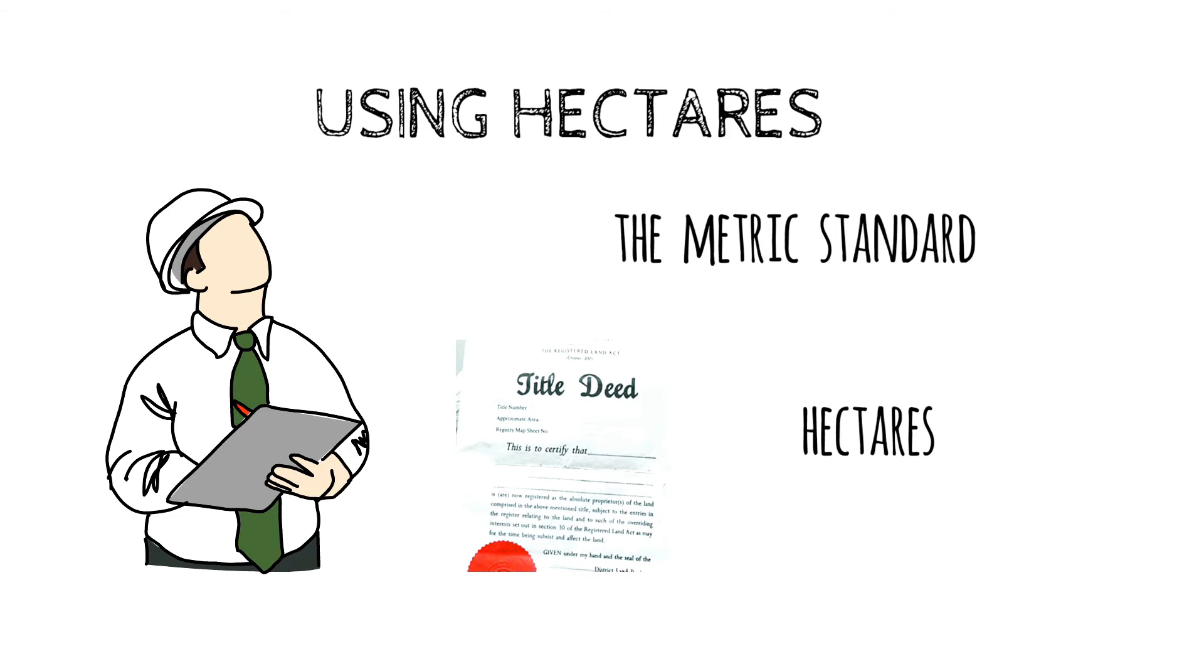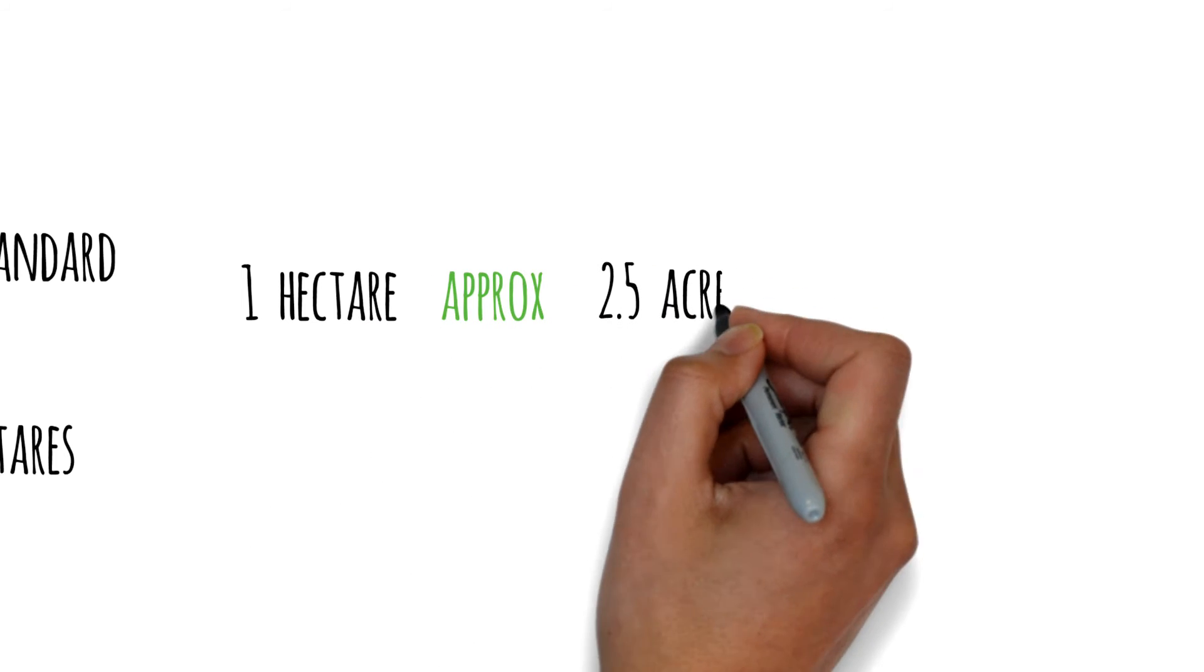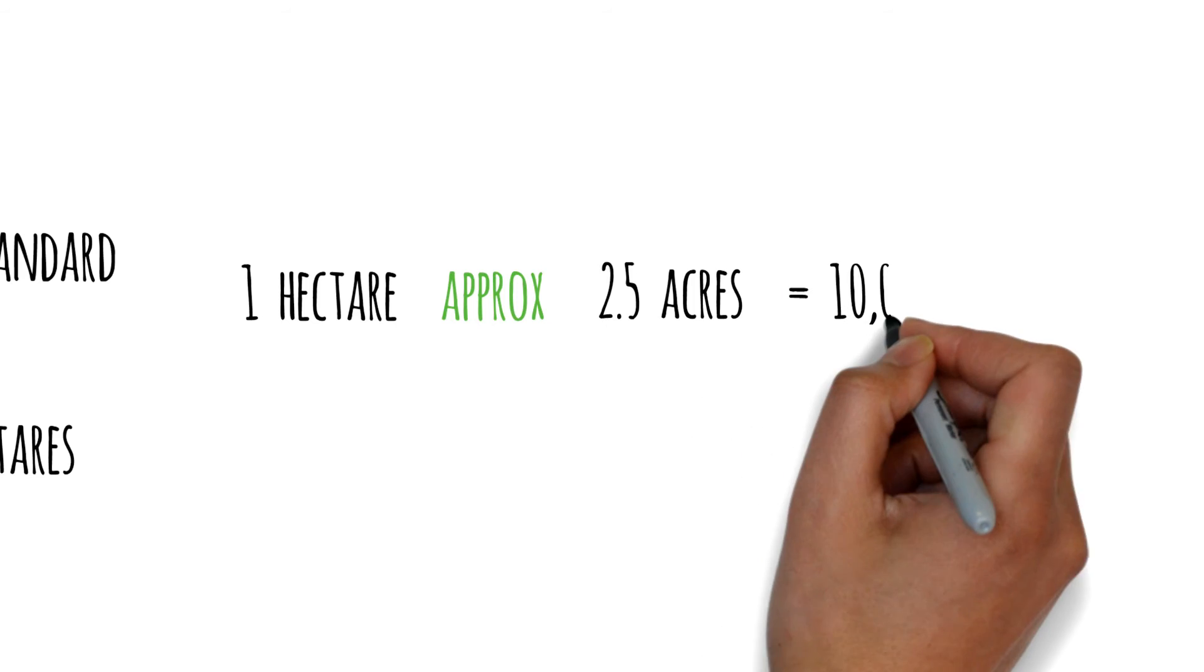Even if you like calling your land an eighth of an acre or a 50 by 100 plot, it was surveyed in hectares. So what is a hectare? It's a unit to measure the area of land in metric standards. One hectare equates to approximately 2.5 acres of land, and it also equates to 10,000 square meters of land.